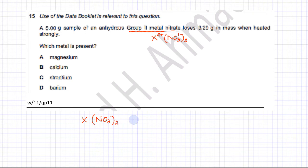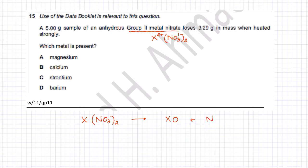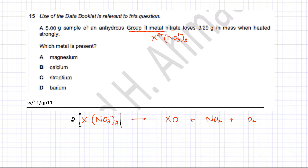When the nitrate decomposes, it produces a metal oxide XO (since X is 2+ and O is 2−), plus NO₂ gas and O₂ gas. Whenever a nitrate decomposes, it produces these three things. Balancing the equation: 2X(NO₃)₂ → 2XO + 4NO₂ + O₂.